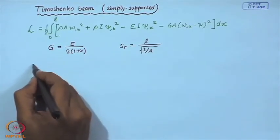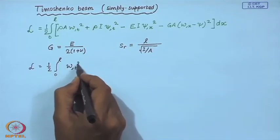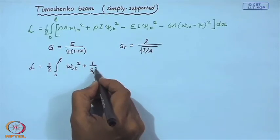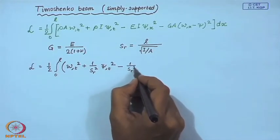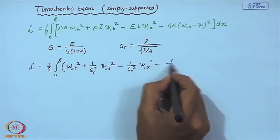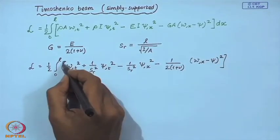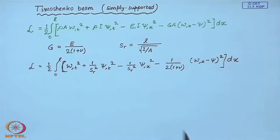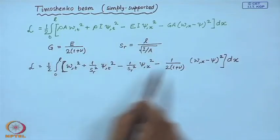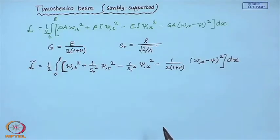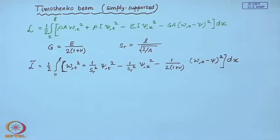In order to simplify this, we use the definition of the shear modulus and we also define what is known as the slenderness ratio. With these definitions, we can take out the material constants and simplify. This actually gives us L tilde. Now, let us look at the boundary conditions of a simply supported Timoshenko beam.